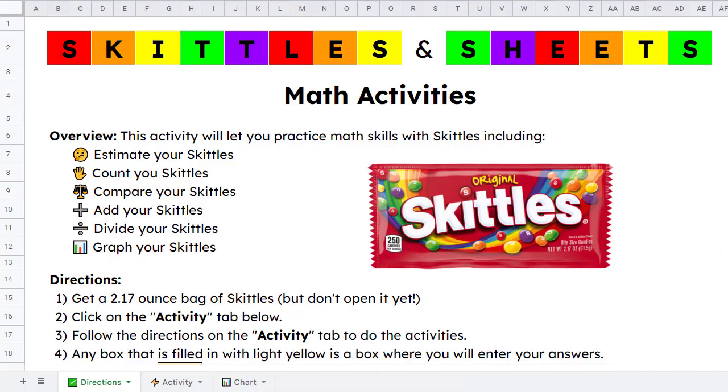Inspired by this, I have created an interactive, self-checking Google Sheets template called Skittles and Sheets, which allows students to practice skills including estimating, counting, comparing, adding, dividing, and graphing. And the sheet is self-checking, so it provides feedback to the students as they work through each problem, letting them know if they got it correct or not. Let's take a look at how to get your own copy of this template and how it works.